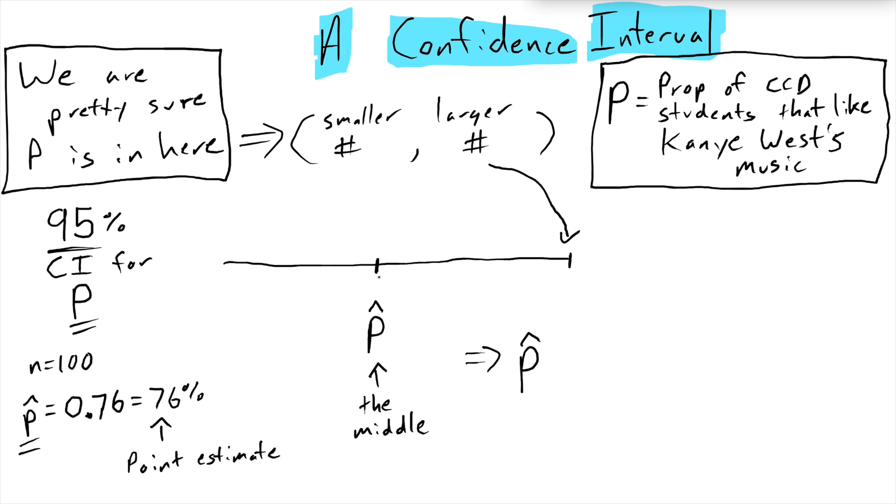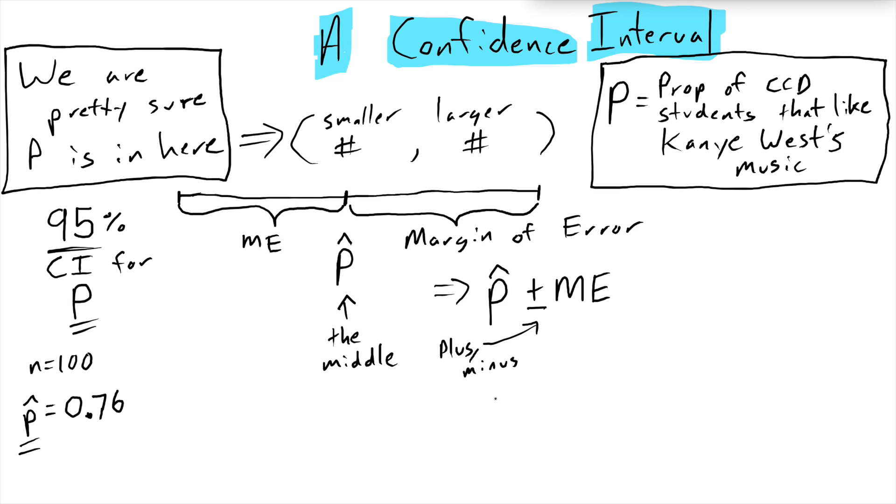So it starts out with p hat. And then we want to get to that larger number. And what we're going to do is add what we call the margin of error. So that's p hat plus the margin of error. And to get to the smaller number, I'm going to subtract the same quantity. So the way that shows up in our formula is that we get this plus and minus sign, which means we need to do both. We need to add and subtract the margin of error. And when we do that, we get our interval.